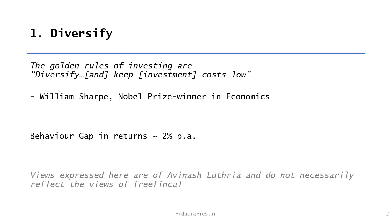The first approach is to diversify. William Sharp is a Nobel Prize winner in economics and one of the pioneers of modern personal finance. Those who follow a mature approach may not have heard of him, but they have gravitated towards following his golden rules of investing: to diversify and keep investment costs low.